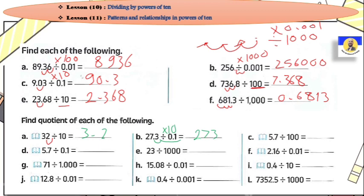Letter C: 5.7 divided by 100, so go back two digits. So it will be 0.057. The next: divided by 0.1, it means we will multiply by ten. So move one digit to the right. It will be 57.